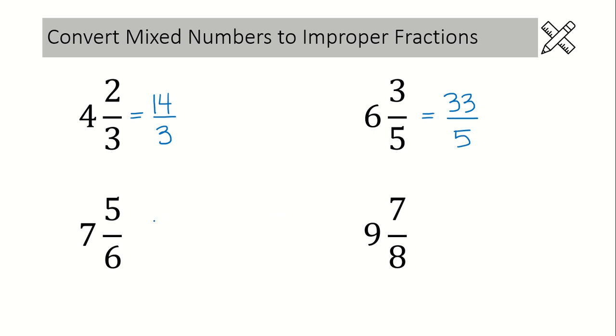Alright two more examples to go. In this example here we have a denominator of 6. So we start off by writing that. And then to find our numerator we will do 6 times 7 is 42 plus 5 is 47.